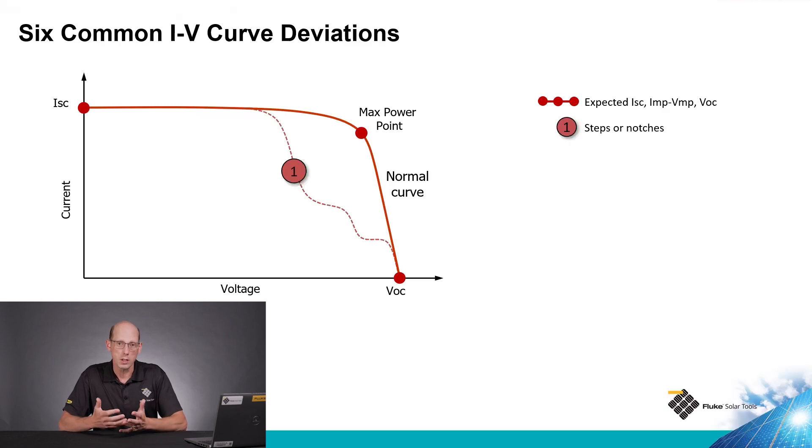The first deviation for IV curves are steps or notches in the IV curve. These can be caused by several different things. The most common one is irregular shading, maybe a cell shaded, damage to a cell, a bypass diode that's activating either because it's shaded or because there's damage to the bypass diode.